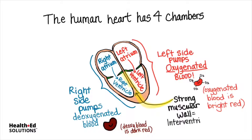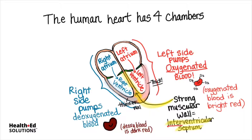In between the two ventricles, this interventricular septum — you can see in the name — 'inter' means between the ventricles, and the septum is a wall. This thick wall prevents mixing of the blood from the two sides of the heart. The entire left ventricle has a much thicker wall because it has to build enough pressure to pump blood to the entire body. The right ventricle has a much thinner wall because it only has to build up enough pressure to push the blood to the lungs, which are on either side of the heart.